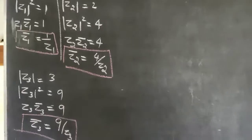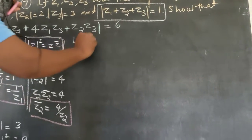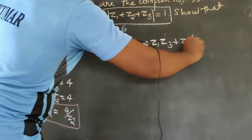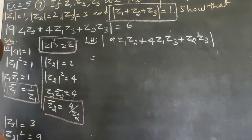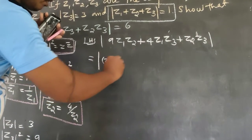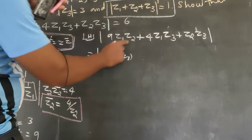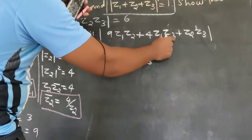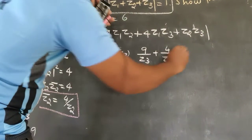The fourth given condition: modulus of Z1 plus Z2 plus Z3 equals 1. Now for the proof, consider modulus of 9Z1Z2 plus 4Z1Z3 plus Z2Z3. We take out Z1Z2Z3 as a common factor outside.